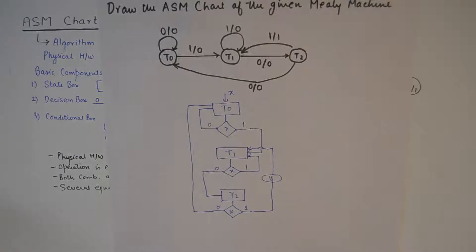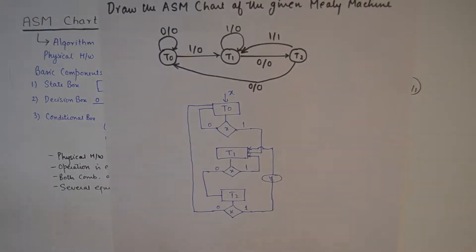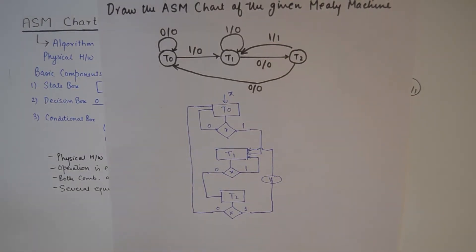That is how the ASM chart of this Mealy machine is drawn. I hope the conversion of a state transition diagram into an ASM chart is clear now with these two examples. If you liked the video give it a thumbs up, and if you liked the content of the channel consider subscribing. I'll see you in the next video — take care, bye bye.